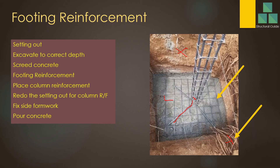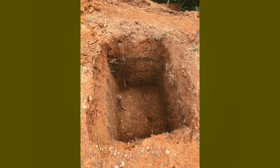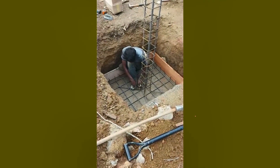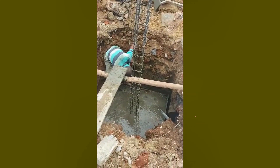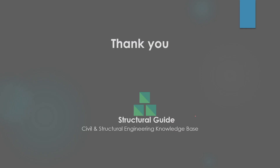Thereafter you can pour the concrete. Once the formwork is in place, you do the concrete pour. You tie the reinforcement, fix the formwork, pour the concrete, and compact it adequately using a vibrator. With that we end today's discussion. Let's meet again in a new video — thank you very much.